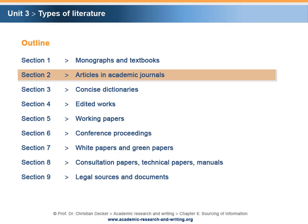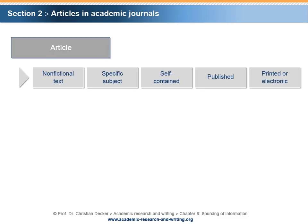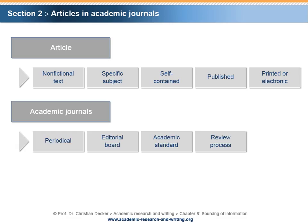Section 2: Articles in Academic Journals. Basically, an article is a non-fictional text that deals with a specific subject and is self-contained. Articles are published in print or in electronic format. Academic articles are published in academic journals. Academic journals are periodically published. An editorial board sets academic standards for articles to be published. Typically, an institutionalized review process ensures compliance with academic standards.